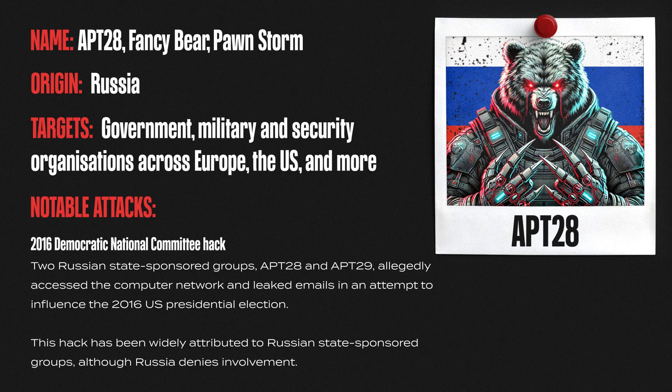APT 28, also known as Fancy Bear, Pawnstorm and other names — we took a brief look at this group in the nation state video. As a quick reminder, this is a notorious group that has been active since the mid-2000s and is believed to be linked to the Russian GRU. They target government, military and other high value targets around the world, and their motives seem very consistent with the interests of the Russian state.